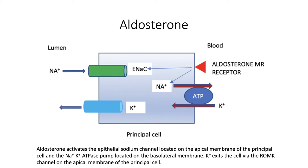Aldosterone binds to the receptor in the principal cell. It activates the sodium-potassium ATPase pump and also the ENaC — the epithelial sodium channel — which is on the apical side of the principal cell. ENaC makes the cell absorb sodium, which leaves a negative charge, and then potassium goes out via the ROMK, the renal outer medullary potassium channel.